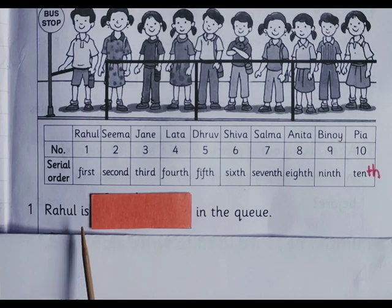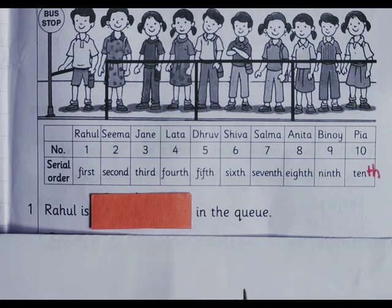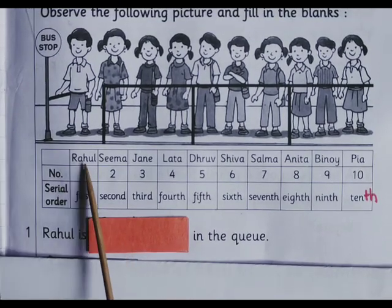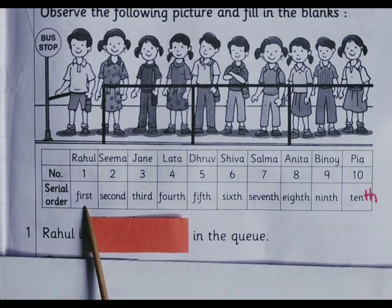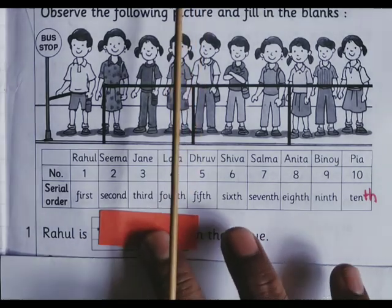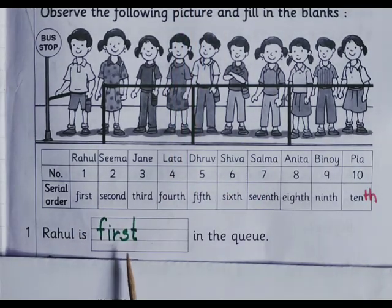Rahul is dash in the queue. Rahul is first in the queue.